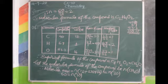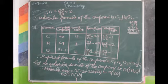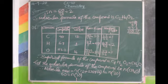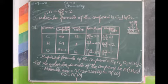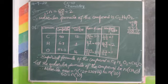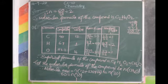So first find empirical formula from percentage composition, then find the rough molecular formula. Using the molecular mass given, find N. Alternatively, find empirical formula mass (= 30), then N = molecular mass ÷ empirical formula mass = 60 ÷ 30 = 2. Molecular formula = N × empirical formula = C2H4O2.